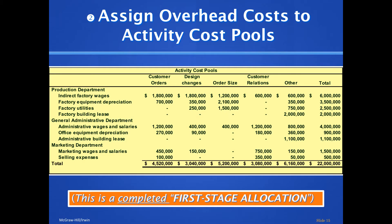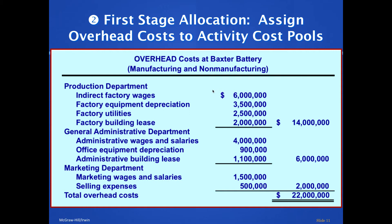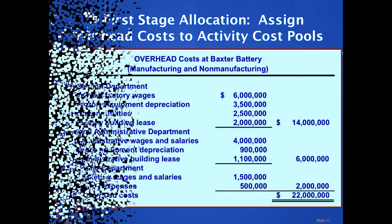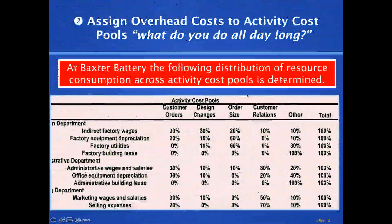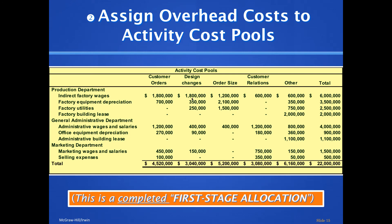After completing the first stage allocation, we took all costs in their raw form, multiplied them by their respective percentages, and spread them across the activity buckets. The 22 million dollars total is still there — it's just distributed differently now. This shows how much was spent on each company activity. Said another way: what did we do all day long, and how much did it cost us?